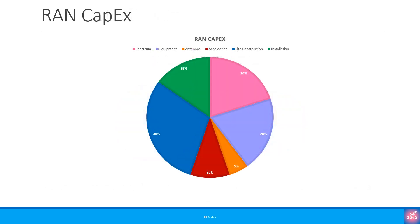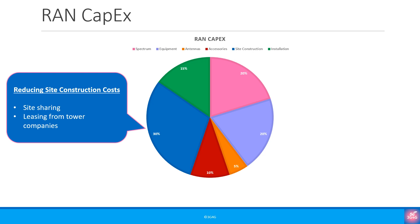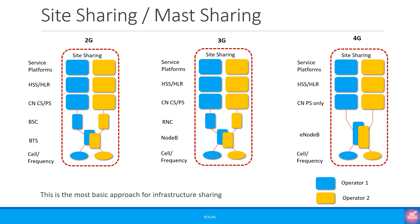Now let's understand the RAN CapEx and see how operators can optimise and reduce it. Instead of building the mobile network sites themselves, many operators are now preferring to partner with other operators for site sharing, or leasing the sites or space on a tower from tower companies. In case of site sharing the cost can be cut in half. In case of leasing, the CapEx gets converted to OpEx. Site sharing means only sharing of the space on the tower or physical site — all operators will still have to deploy their own equipment, backhaul, power, etc.